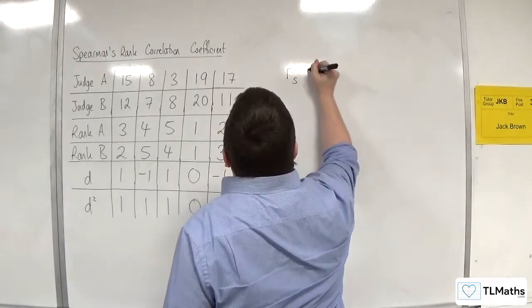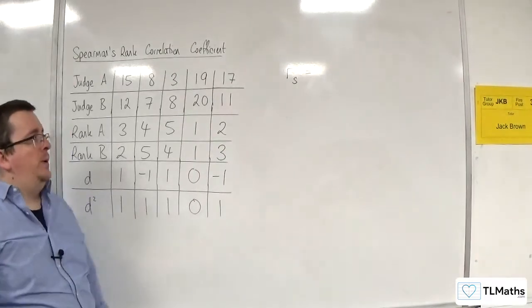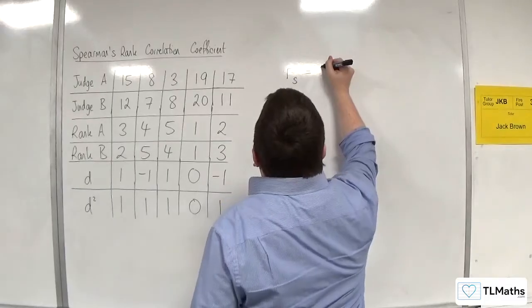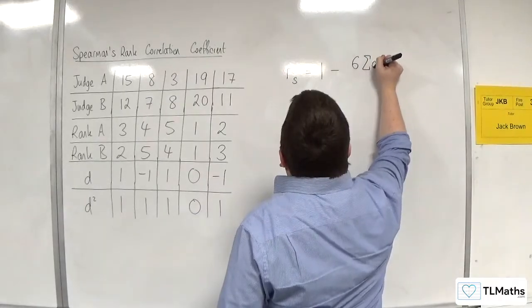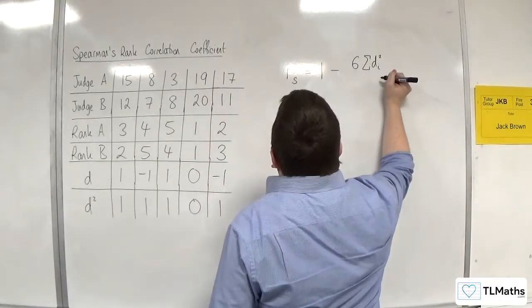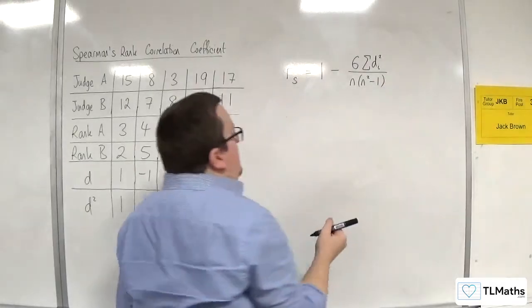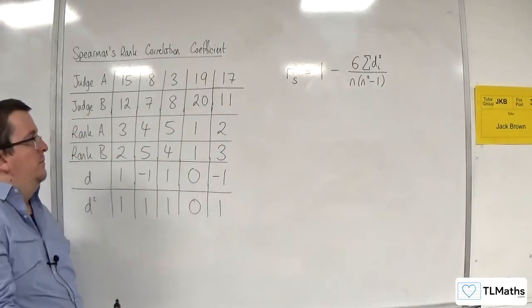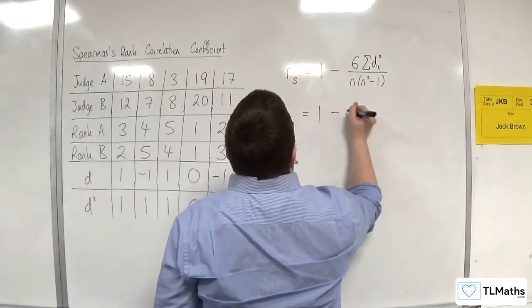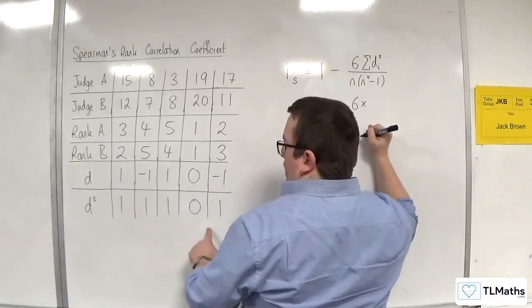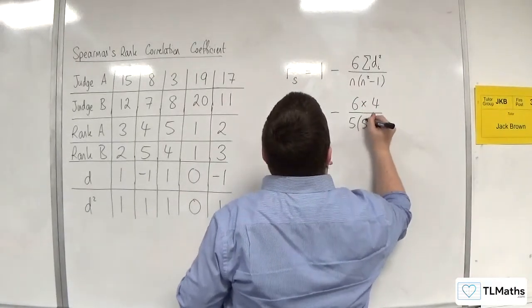And then Spearman's rank correlation coefficient, which is written as R with a little s next to it, as for Spearman's, is given by this formula: 1 take away 6 times the sum of all of the differences squared, divided by n times n squared minus 1, where n is the number of data items. So in this case it would be 1, 2, 3, 4, 5. So, 1 take away 6 lots of all of those added together, which is 4, divided by 5 times 5 squared, take away 1.